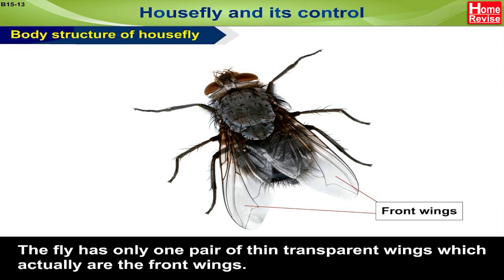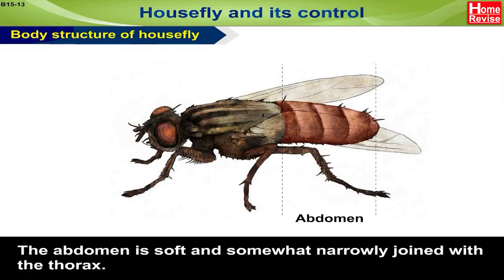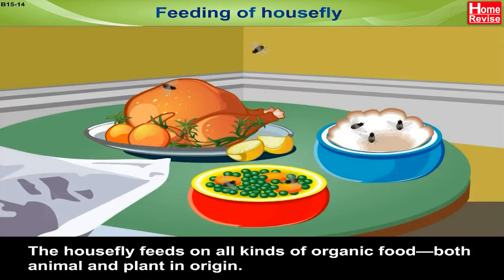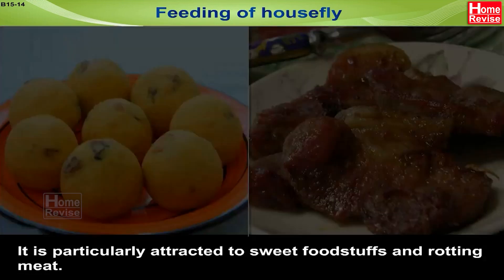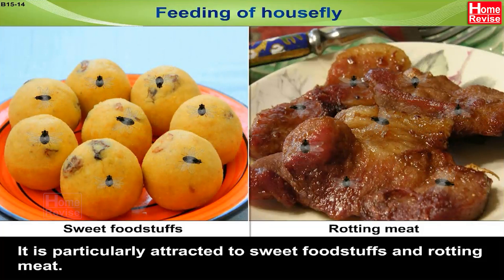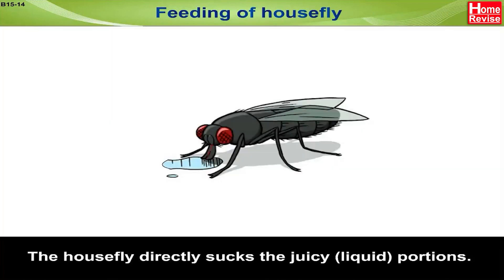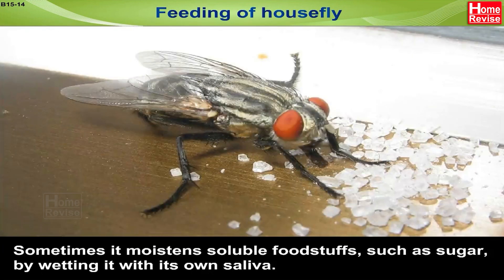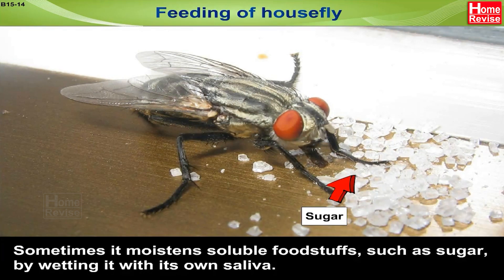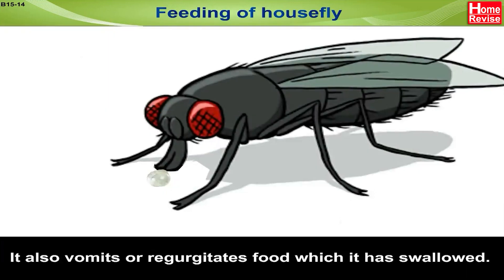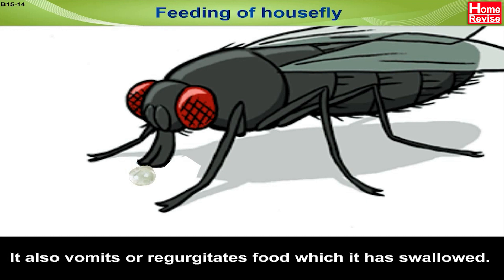The abdomen is soft and somewhat narrowly joined with the thorax. Feeding of house fly: the house fly eats all kinds of organic food, both animal and plant in origin. It is particularly attracted to sweet foodstuffs and rotting meat. The house fly directly sucks the liquid portions. Sometimes it moistens soluble foodstuffs such as sugar by wetting it with its own saliva. It also vomits or regurgitates food which it has swallowed.